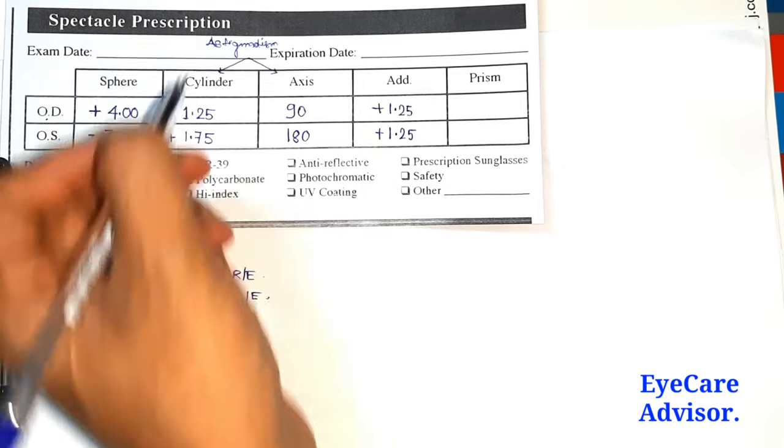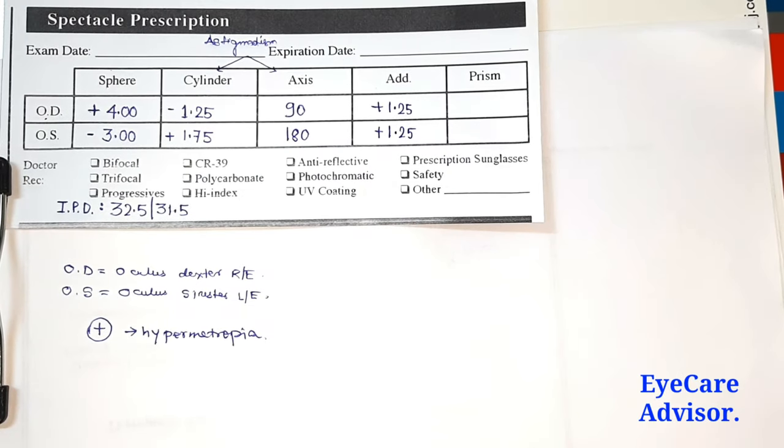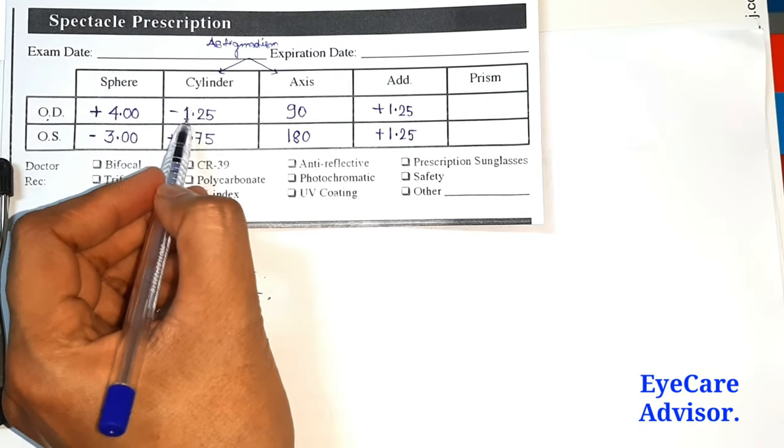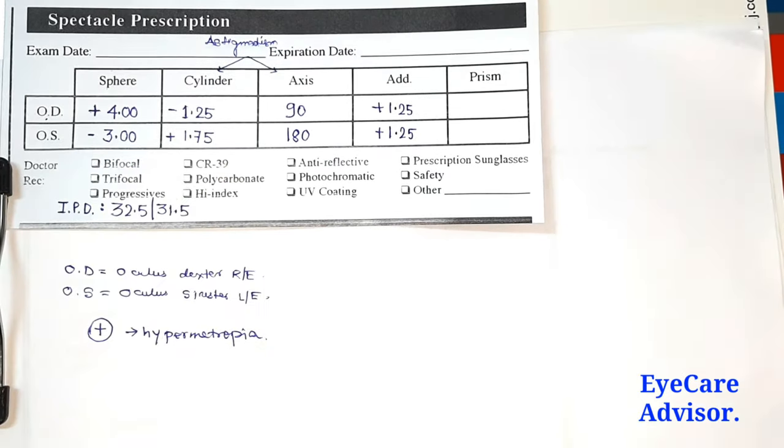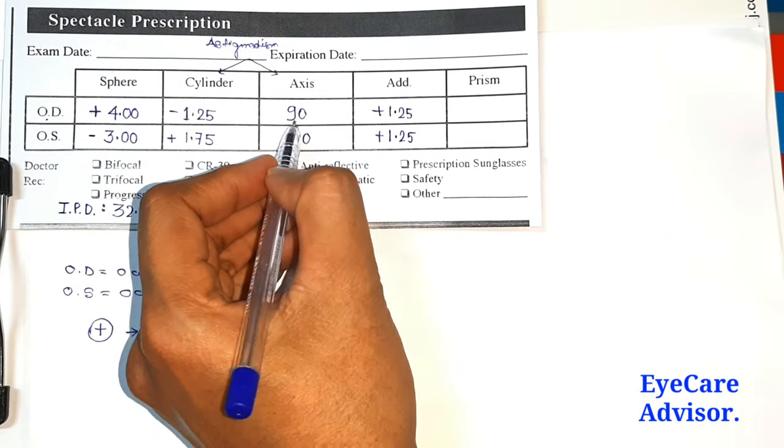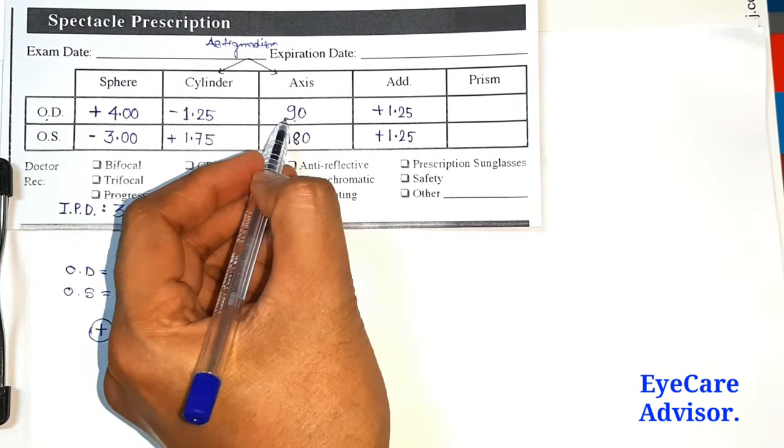That means if your eye is not totally sphere, then it will be there in the prescription. So in this case you can see minus 1.25 is the cylindrical prescription and it comes with 90 degree axis. The cylindrical prescription will always come with the axis.